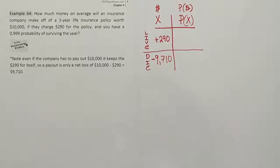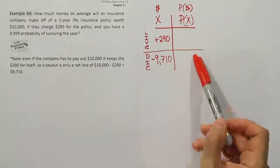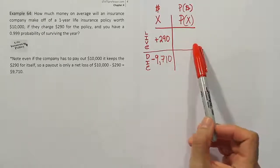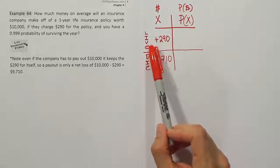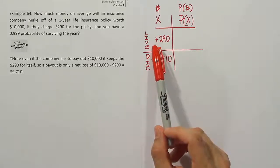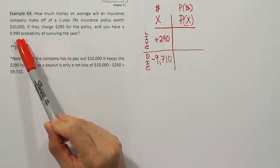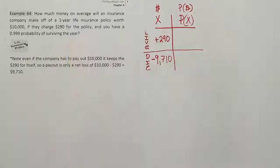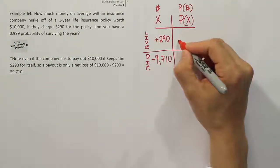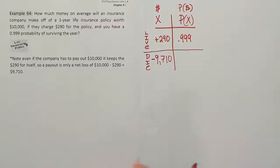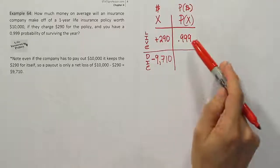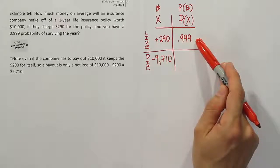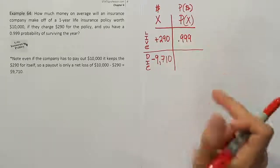Now the next phase of the problem, once you have the dollar amounts that are appropriate, you have to come up with the corresponding probabilities. What's the probability that the person lives the whole year? That was given to us. It says we have a 99.9% probability of surviving the year. As a decimal, that's .999. By the way, these numbers can be found by looking up actuarial tables on the internet, or you could actually hire an actuary if you were running a company.